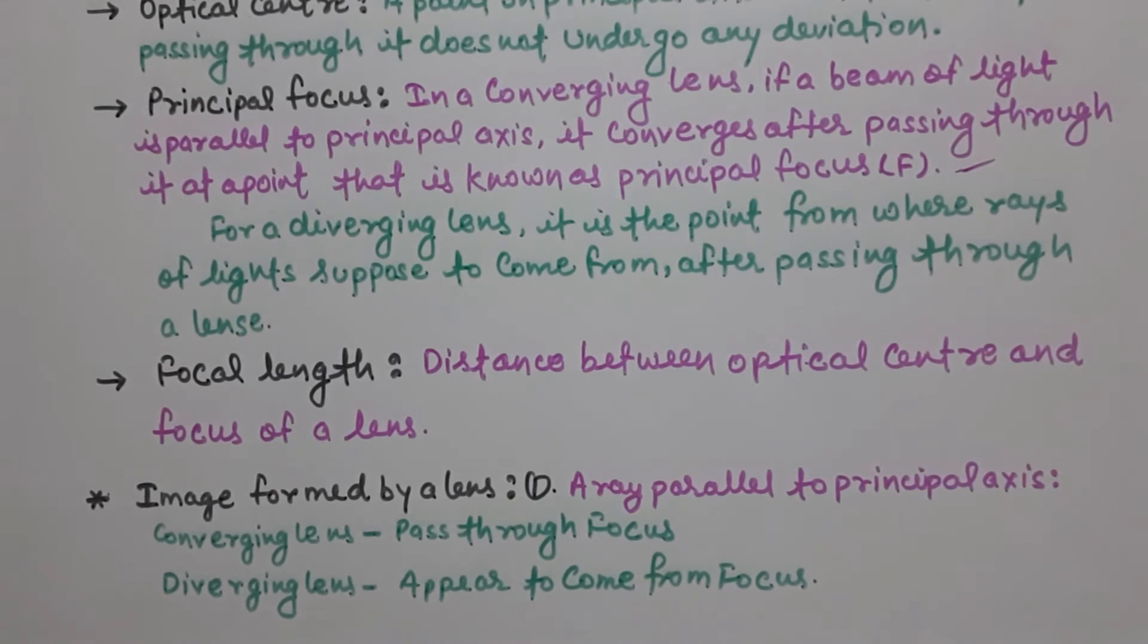So first one, suppose if a ray is parallel to principal axis, then when it passes through a converging lens, then it passes through focus. But in diverging lens, it appears to come from focus. Understand?